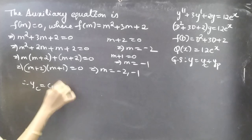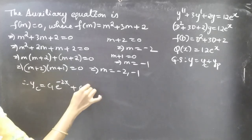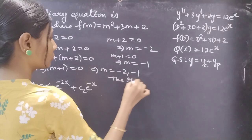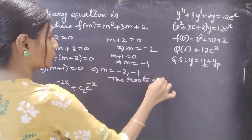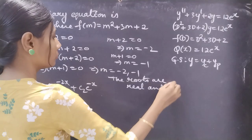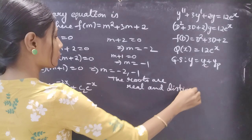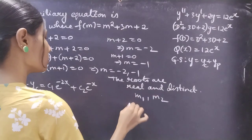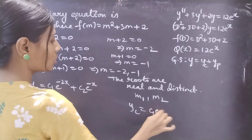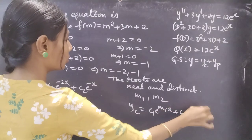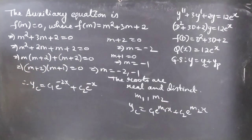Therefore yc = c₁e^(−2x) + c₂e^(−x). The roots are real and distinct. When two roots m₁ and m₂ are real and distinct, yc takes the form: one constant times e^(m₁x) plus another constant times e^(m₂x). Using this, we have our complementary function yc.